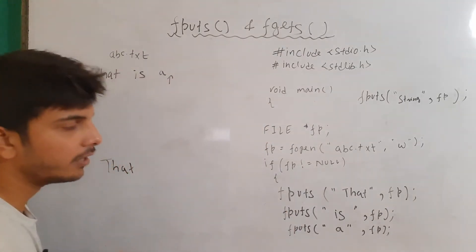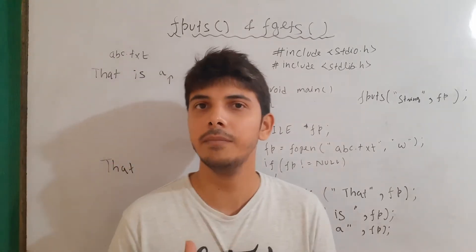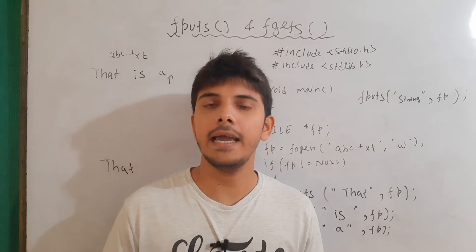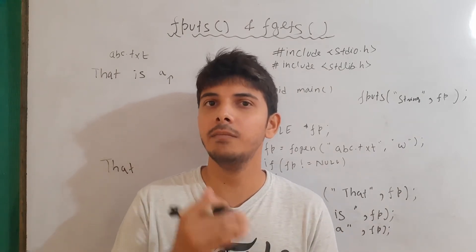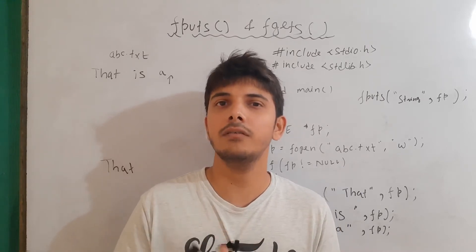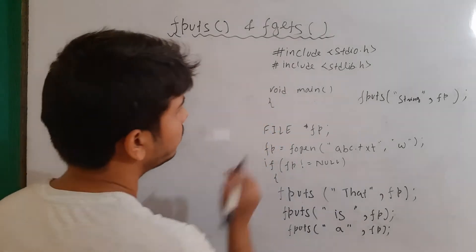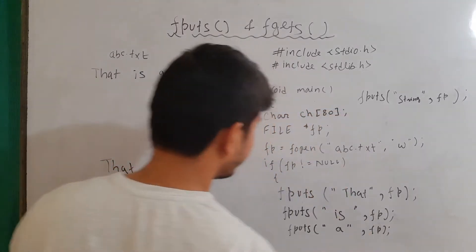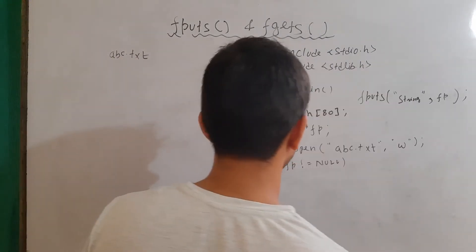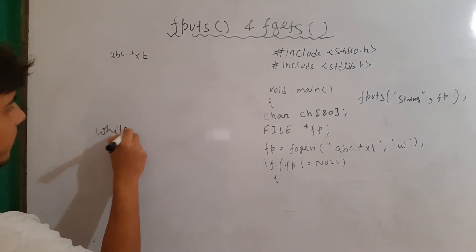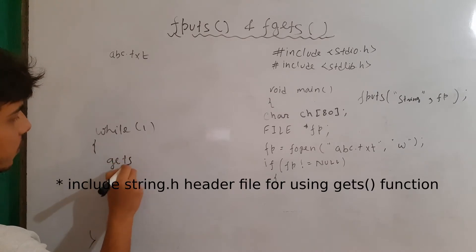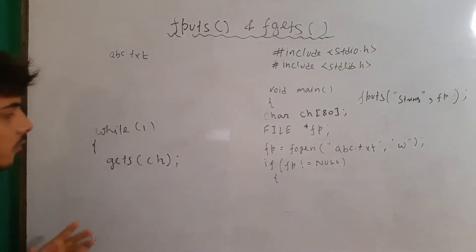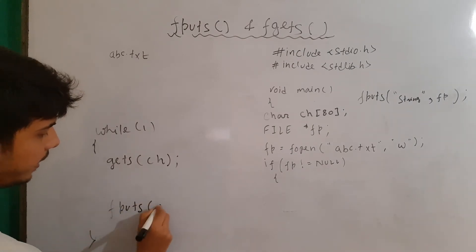Now there is one thing you may not like here — I am writing static data, meaning I already know what is going to be written in the file. There should be a mechanism where a user writes data and that data is stored in the file. Basically, I will take input from the user and store it in the file. For that, we will use an array of characters — let's say of maximum size 80. Then, I'll make an infinite loop using while(1) and ask the user to give some input. Whatever the user writes will be stored in this character array and written to our file.